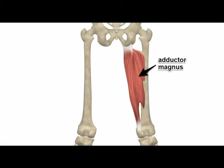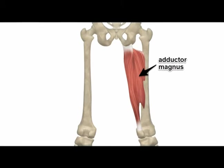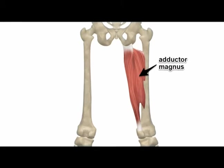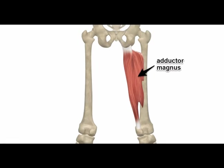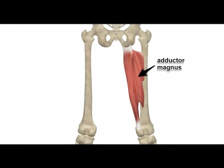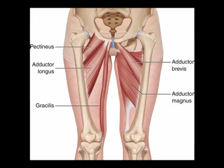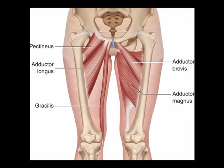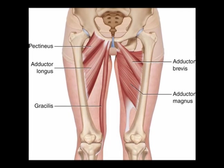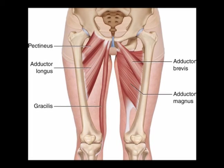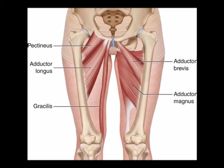Again, hip adduction is when the thigh is moved closer to the midline. The origin of the adductor magnus is the inferior pubic ramus, the ischial ramus, and the inferior lateral area of the ischial tuberosity. The insertion is the gluteal tuberosity of the femur, the medial lip of the linea aspera, the medial supracondylar ridge, and the adductor tubercle.